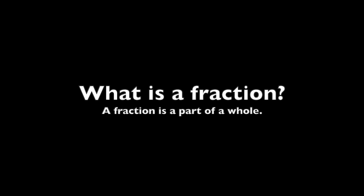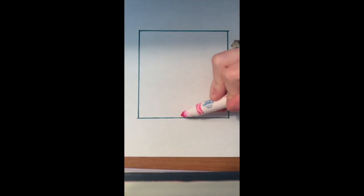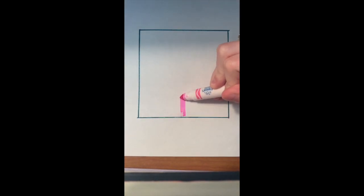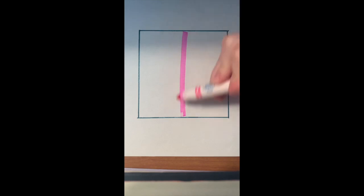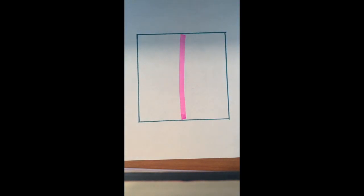So what is a fraction? A fraction is part of a whole. So let's look at this square — this square is the whole. Now if we split this square down the middle, we have two parts, and those two parts are equal to the whole. You have to have both of those pieces to make the whole.